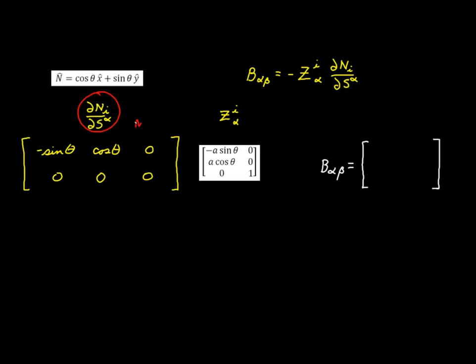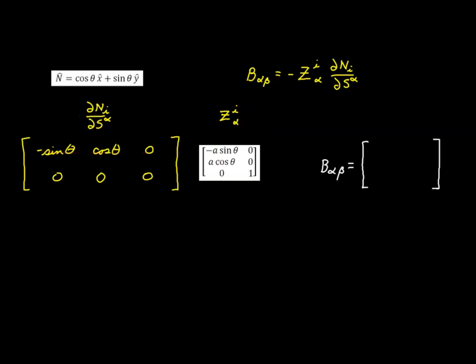We now have all the elements established. We have this set of components and that makes up the two elements. The next step is to combine them with a contraction, contracting on the i-index, which means we contract each row with each column. Because we are contracting a 2×3 matrix with a 3×2 matrix, the end result is going to be a 2×2 matrix.